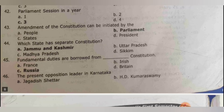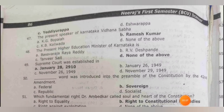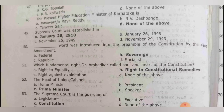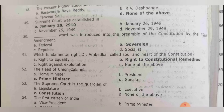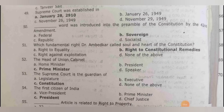Fundamental duties are borrowed from Russia. The present opposition leader in Karnataka is Siddaramaiah. The present higher education minister of Karnataka is Vishweshwara Hegde, and the higher education minister at the central level is Ashwat Narayan. The Supreme Court was established on 28th January 1950. The word 'sovereign' was introduced in the preamble through the 42nd amendment.